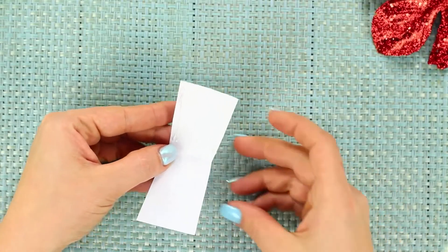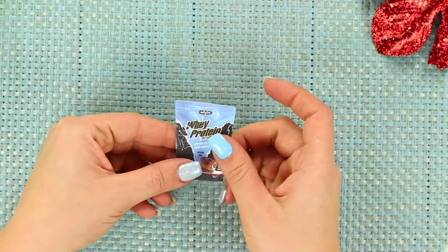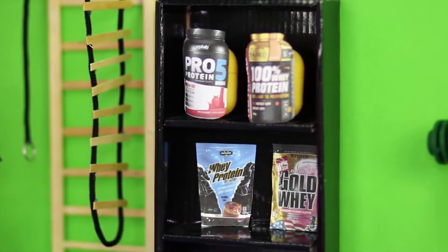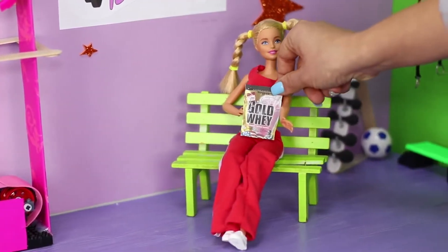Seal the edges with hot glue. Done! It is very important for an athlete to maintain a diet. And Barbie now has a whole shelf of sports supplements!